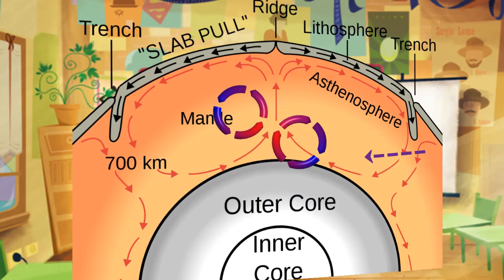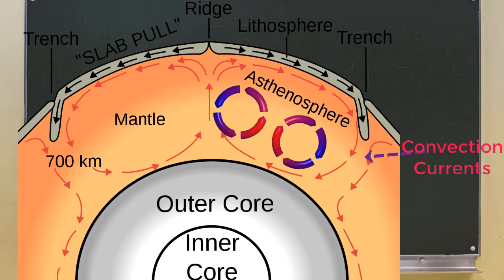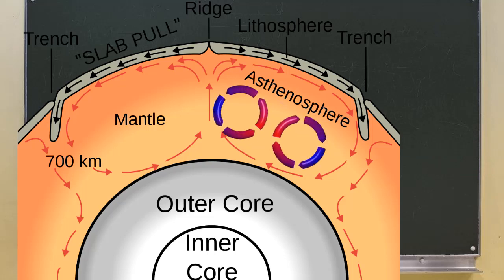The question is, how do plates move? One hypothesis is that large convection currents within the mantle move the plates. Movement is caused by the difference in temperature, causing a rising and sinking cycle.